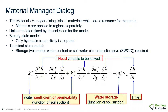Therefore the water storage function or the soil water characteristic curve is not required for a steady state analysis. In a transient state model the storage can change over time, and the specification of both the coefficient of permeability and the function of soil suction, as well as the water storage in terms of the soil water characteristic curve, must be specified.